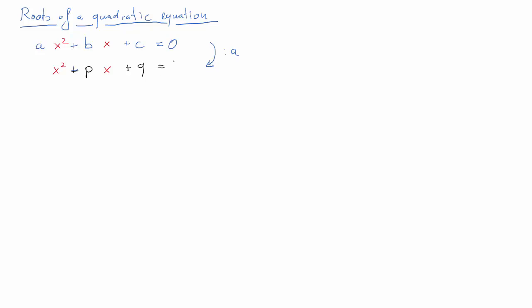What we are really interested in is the roots of this equation, so the values of x that make this function equal to zero. Both of these are equivalent formulations; we get from one to the other by dividing through a. And as it turns out, the coefficients p and q on the one hand, and a, b, and c on the other, are related.